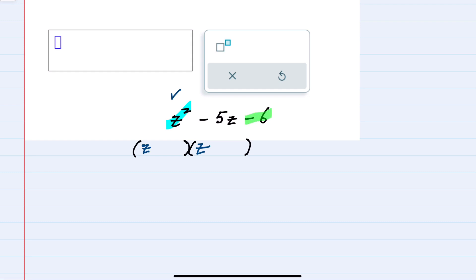But we would then turn to that last term which is minus 6. And I have a couple of different options for terms that multiply to be minus 6. Terms that multiply to be 6 could either be 1 times 6 or 2 times 3.